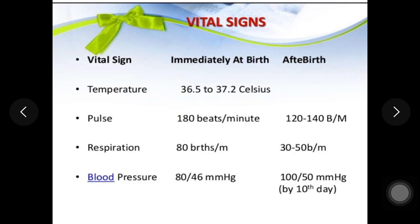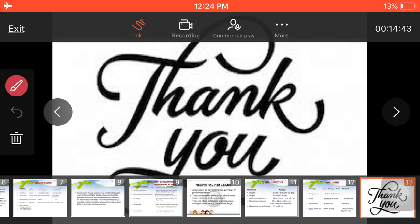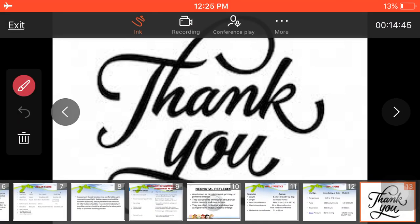Vital signs: temperature 36.5 to 37.2 degrees Celsius; pulse 180 beats per minute; respiration 80 breaths per minute; blood pressure 80/46 mmHg. This concludes the assessment of the newborn baby.